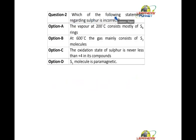Which of the following statements regarding sulfur is incorrect? The vapor at 200 degrees Celsius consists mostly of S8 rings. In such questions, you can't just remember the facts like this. At 600 degrees Celsius, the gas mainly consists of S2 molecules. This is correct. Now find out the incorrect option straight away.